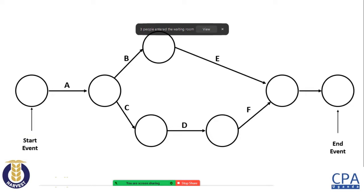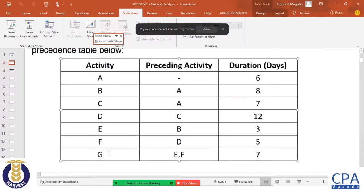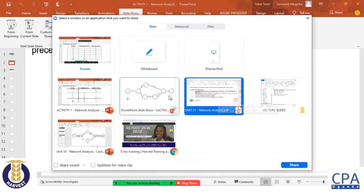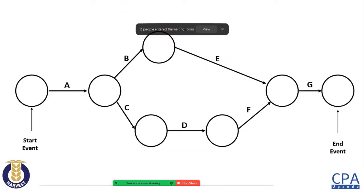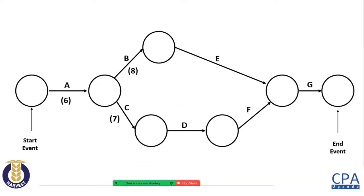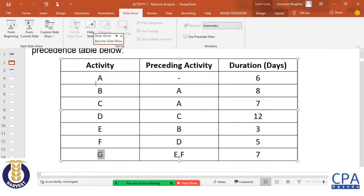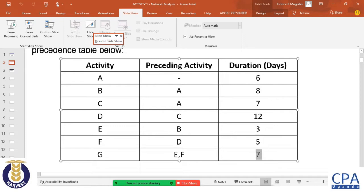After E and F are done we start on G, so we bring activity G out of that shared circle. That gives us the complete network diagram for the project. Now let us put our duration times: A takes 6 days, B takes 8, C takes 7, D takes 12, E takes 3, F takes 5, and G takes 7 days.